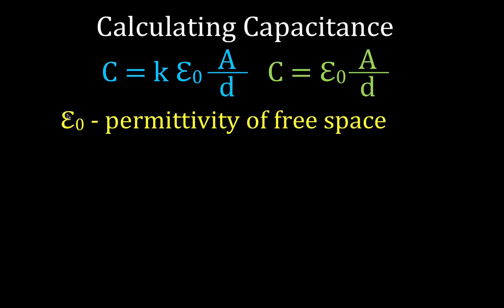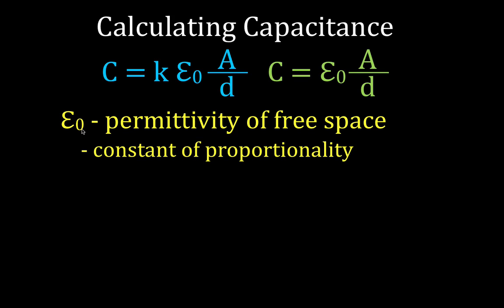Then we have epsilon naught — the permittivity of free space. The permittivity of free space is a constant of proportionality. That constant is 8.85 times 10 to the minus 12. You might see different units: this is coulombs squared over newton meter squared. You'll also commonly see it written as farads per meter. These are the two most common units for this constant of proportionality, 8.85 times 10 to the minus 12, also known as the permittivity of free space.